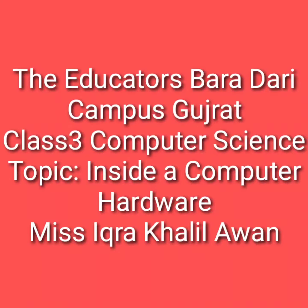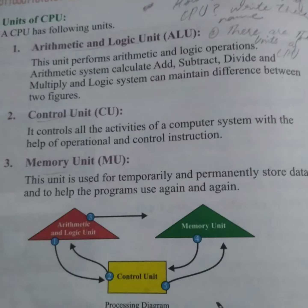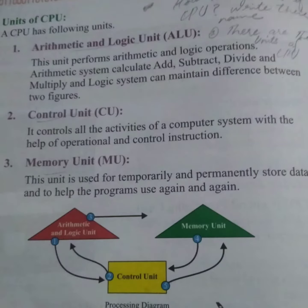Assalamu alaikum, Class 3. Today our topic is inside a computer — hardware units of CPU. A CPU has the following units: number one, Arithmetic and Logic Unit; number two, Control Unit; number three, Memory Unit. This unit performs arithmetic and logic operations.